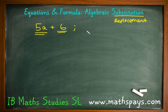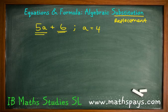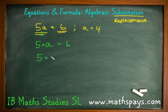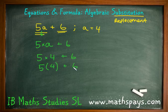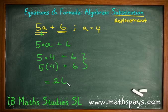However, if I give you a value of what a is equal to, for example 4, then we can now find the value of this expression. Hopefully we remember that there is a multiplication sign between the 5 and the a, which means that when I substitute the number 4 instead of the a, we now get a reasonable arithmetic question. We could also write it like this: 5 brackets 4 plus 6. They both mean the same thing, and either option we could put into the calculator to get the answer of 26.